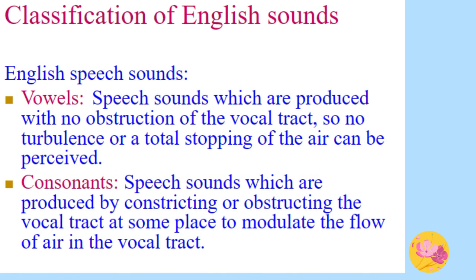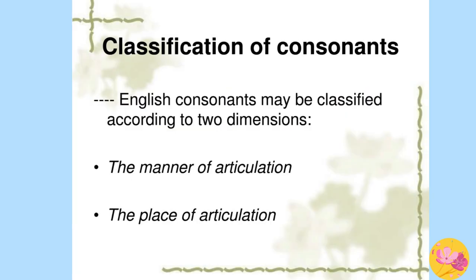Classification of English sounds: English speech sounds are classified into two types — vowels and consonants. Vowels are speech sounds produced with no obstruction of the vocal tract, so no turbulence or total stopping of the air can be perceived. Consonants are speech sounds produced by constricting or obstructing the vocal tract at some place to modulate the flow of air. We will learn about consonants in much more detail.